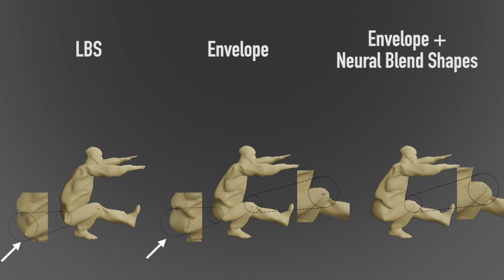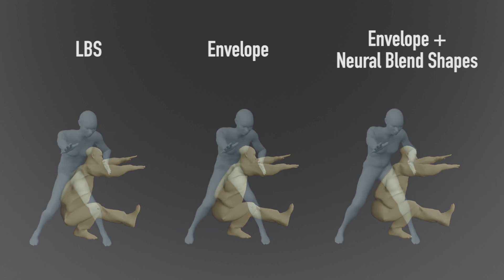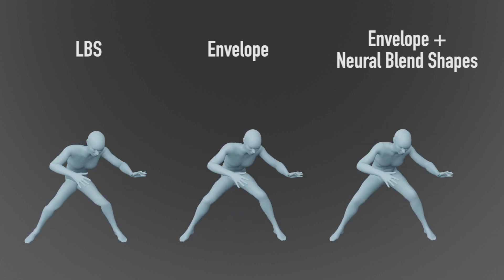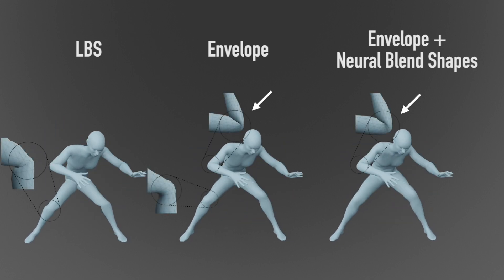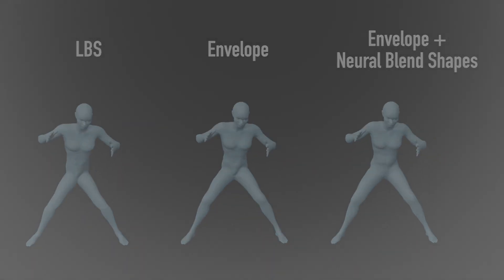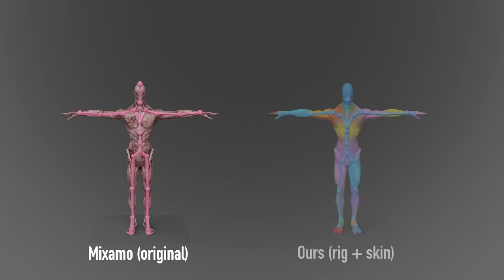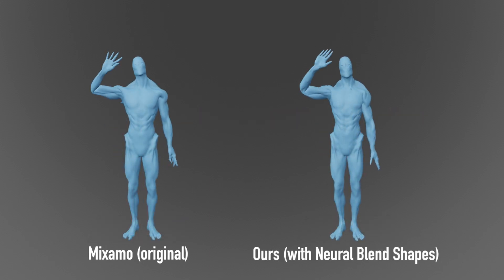Observe that our envelope deformation outperforms baseline LBS techniques, since it was trained on data with high-quality deformations. Also, our neural blend shapes further refine the quality of the deformation in a pose-dependent manner. With a single forward pass, we can even modify the skeletal structure of existing animations and improve their deformation quality.